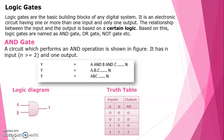AND gate: A circuit which performs an AND operation is called an AND gate. It has greater than or equal to 2 inputs and 1 output. You can write A AND B AND C, otherwise A dot B dot C, or simply ABC. This is the logical diagram for the AND gate.